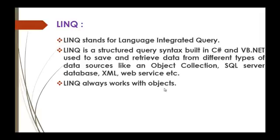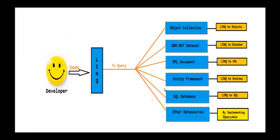Here is a clear picture of what LINQ is and why a developer uses LINQ. A developer uses LINQ to query data resources like object collections, the ADO.NET dataset, XML documents, Entity Framework, SQL databases, and other data structures. LINQ provides the ability to query all these data resources by just writing query syntax using C# or VB.NET.